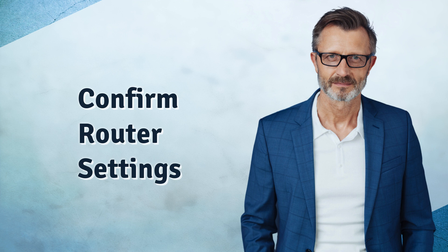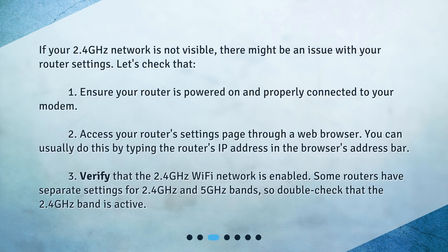Confirm router settings. If your 2.4 GHz network is not visible, there might be an issue with your router settings. Let's check that. 1. Ensure your router is powered on and properly connected to your modem. 2. Access your router's settings page through a web browser by typing the router's IP address in the browser's address bar. 3. Verify that the 2.4 GHz Wi-Fi network is enabled. Some routers have separate settings for 2.4 GHz and 5 GHz bands, so double-check that the 2.4 GHz band is active.